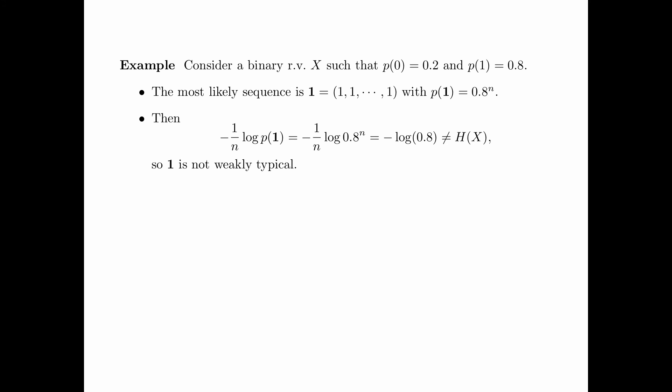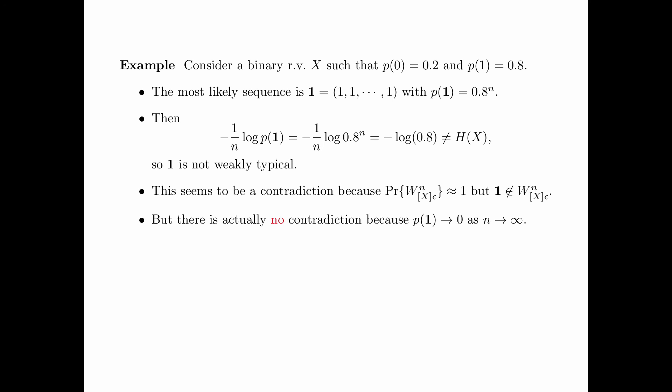With x being the generic random variable, the most likely sequence of length n is the all-ones sequence, with probability 0.8 to the power n. The empirical entropy of the all-ones sequence equals minus 1 over n times log of 0.8 to the power n, which equals minus log 0.8. This is not close to the entropy of x, so the all-ones sequence is not weakly typical. This seems like a contradiction: the probability of the weakly typical set is approximately 1, yet the most likely sequence is not in the typical set. However, there is no contradiction, because as n tends to infinity, the probability of the all-ones sequence tends to 0. Therefore, the weakly typical set, though it does not contain the all-ones sequence, can still have probability approaching 1 as n tends to infinity.